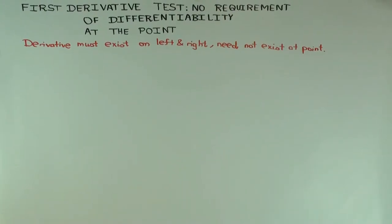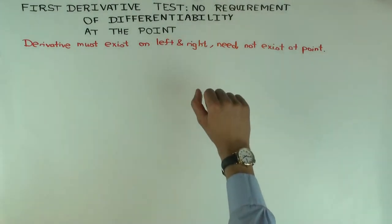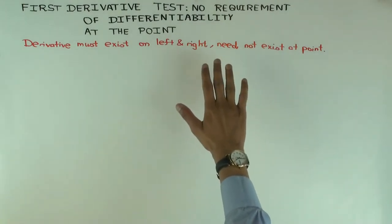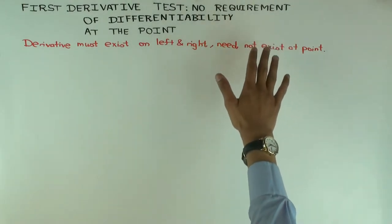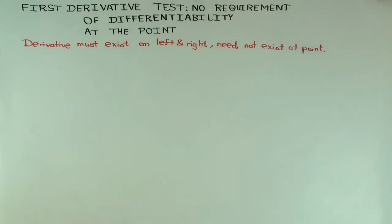In this talk I'm going to discuss one small aspect of the first derivative test. The key point is that for the first derivative test, you do not actually require the function to be differentiable at the point which you are interested in. The goal of the first derivative test is to figure out if a point is a point of local max or min.